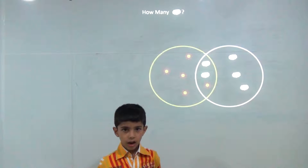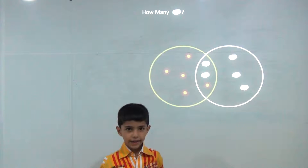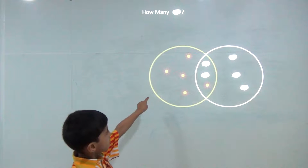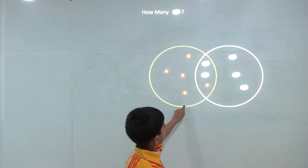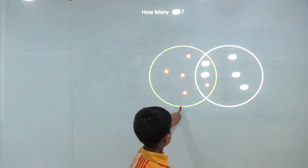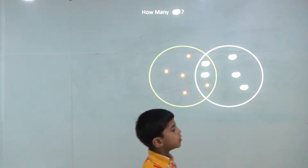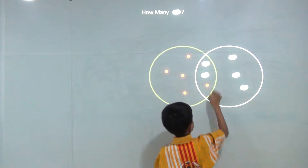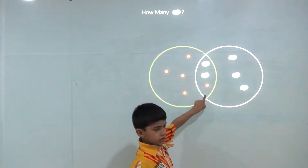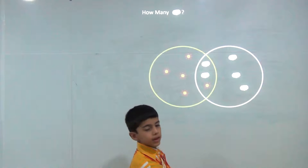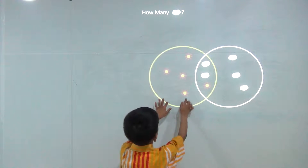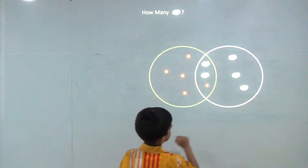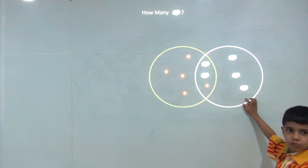Today we will learn Venn Diagrams. There are two circles — one is yellow and one is white. You can see this shape; it is the common area. We will keep the sun here and clouds here.